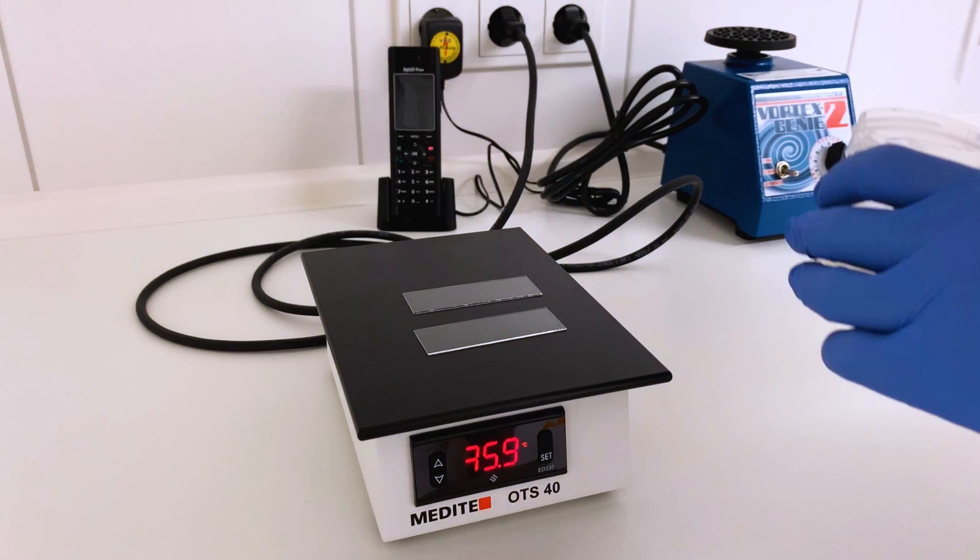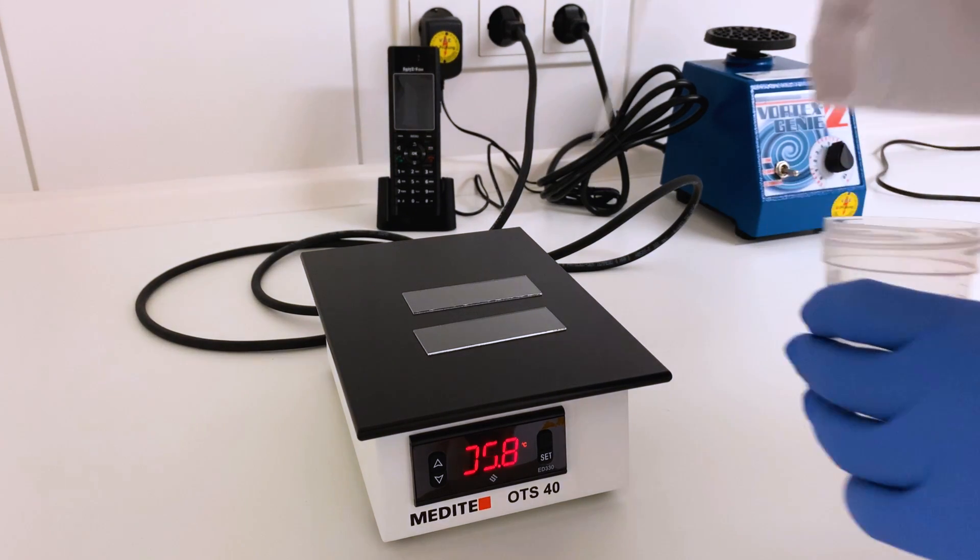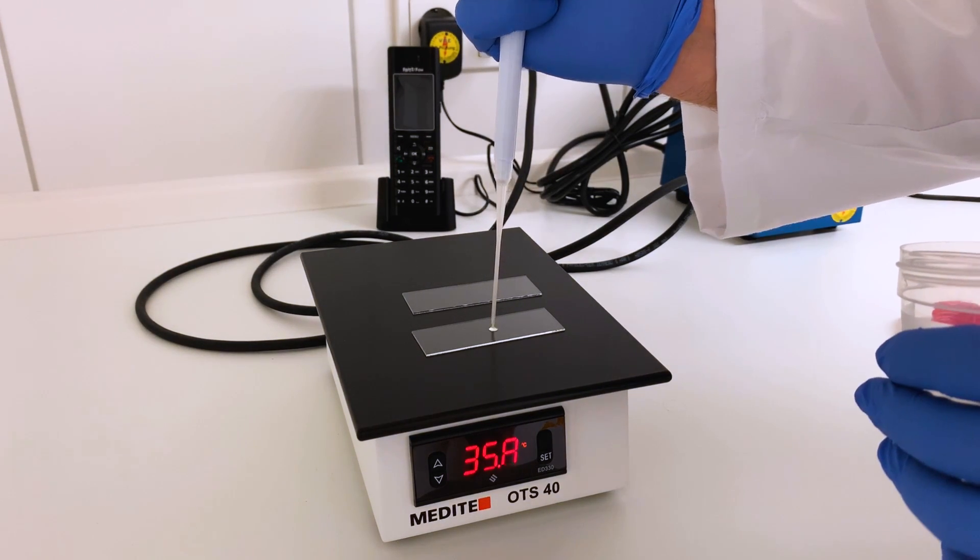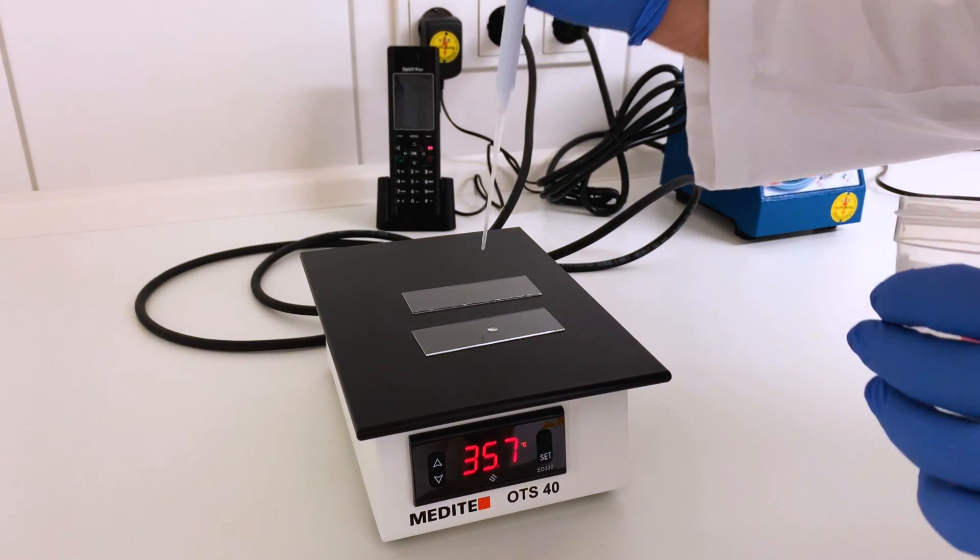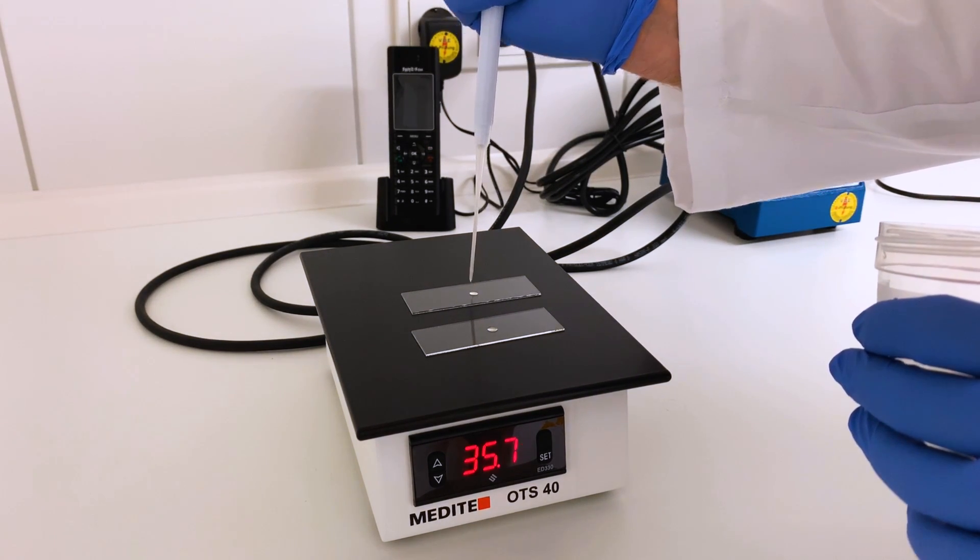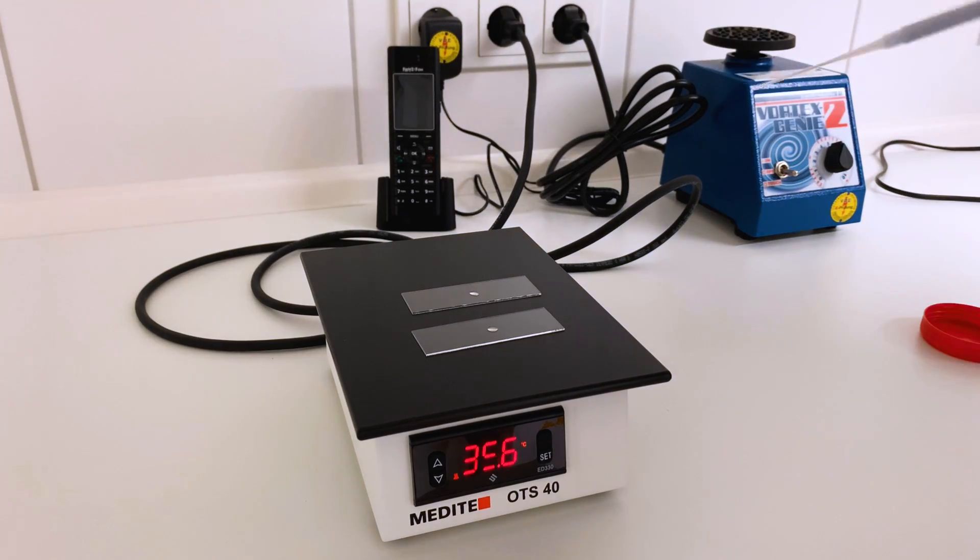For motility assessment it's even more important to have a warm environment therefore I'm keeping my slides on a heating plate. I'm putting 10 microliters of ejaculate onto the slides and then I can look at them under the microscope.